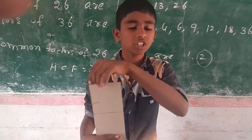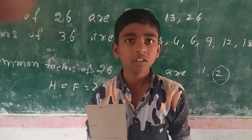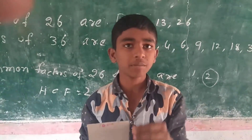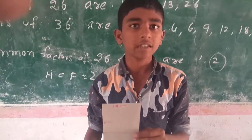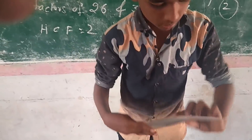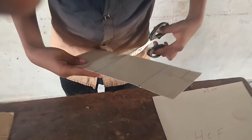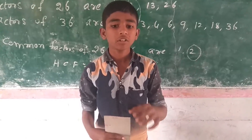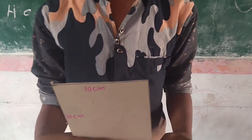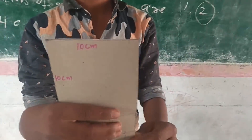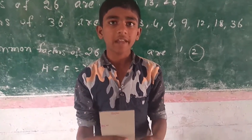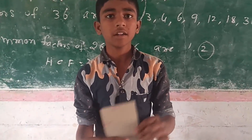Now the remaining part is 10 by 26. Again, what is the highest common area which I can remove from this rectangle? That is a 10 by 10 square, so I remove it. Now the remaining part is 10 by 16. Again, what is the highest common area I can remove? That is 6 by 6, so I can remove it.